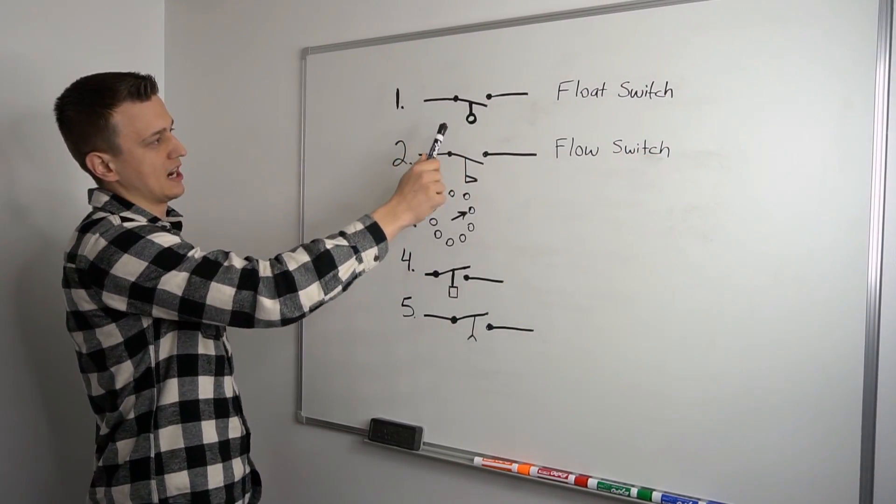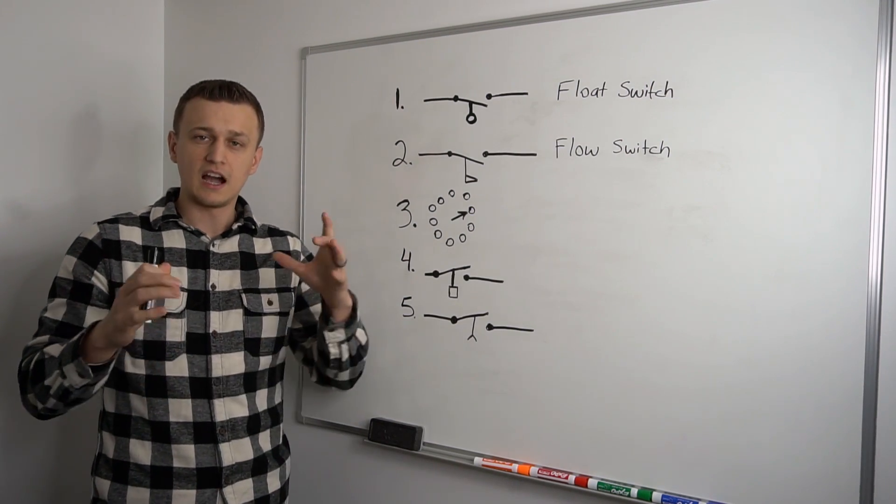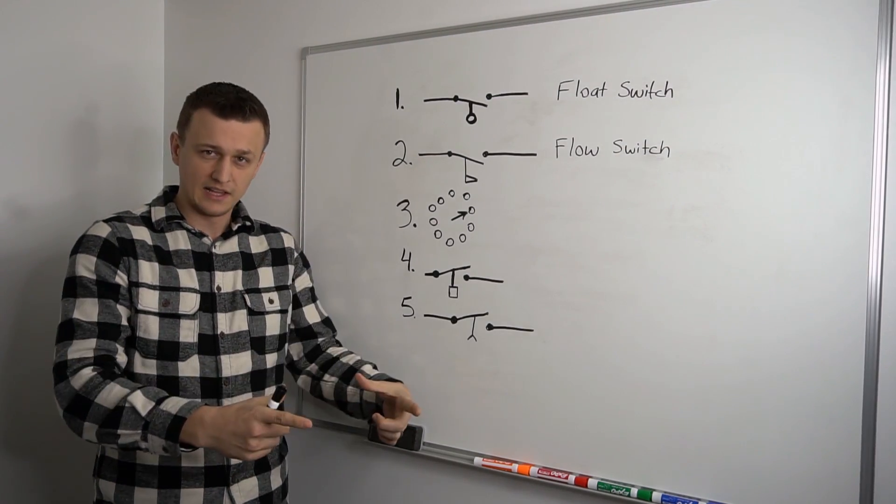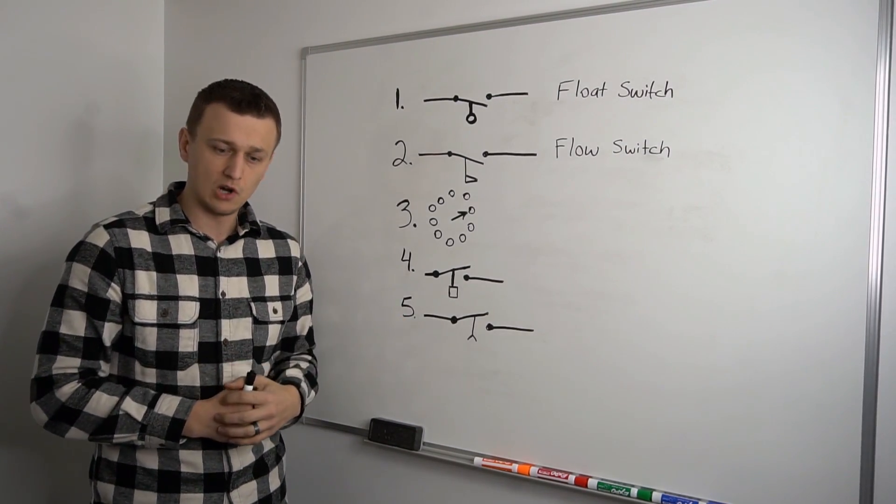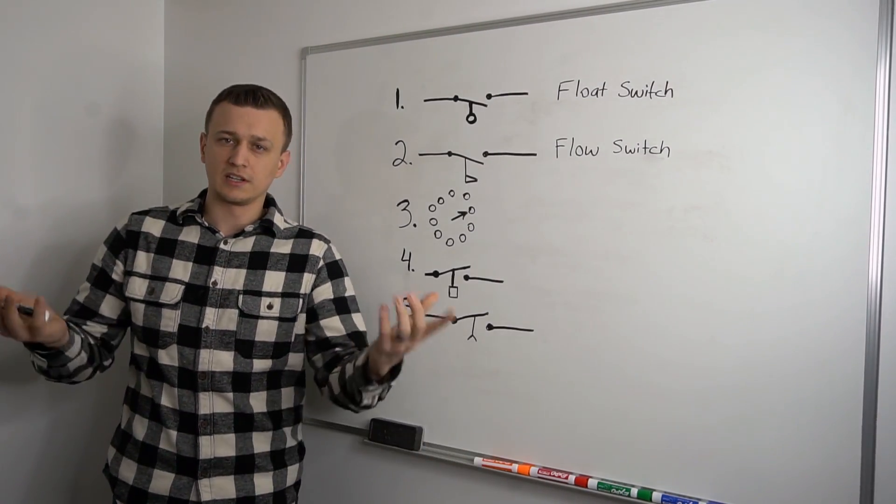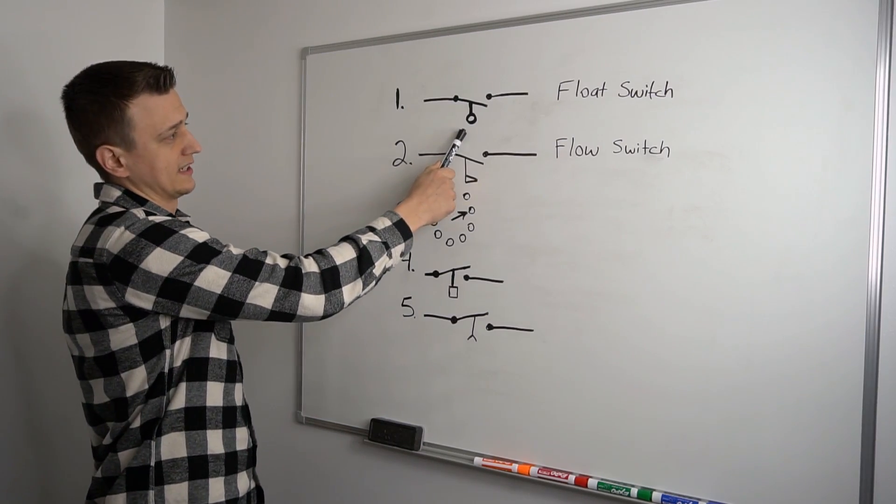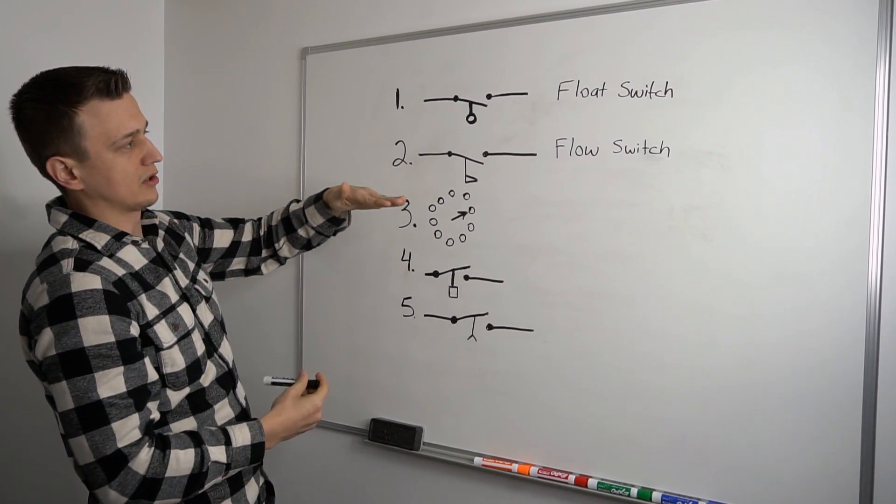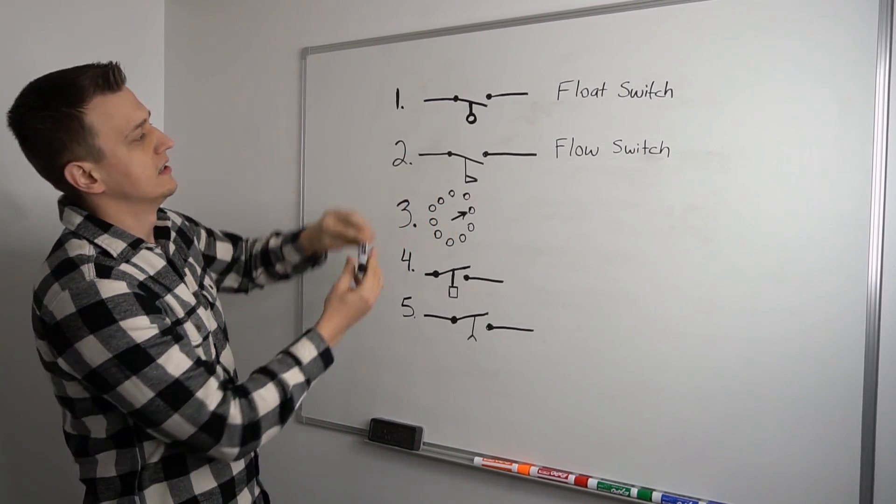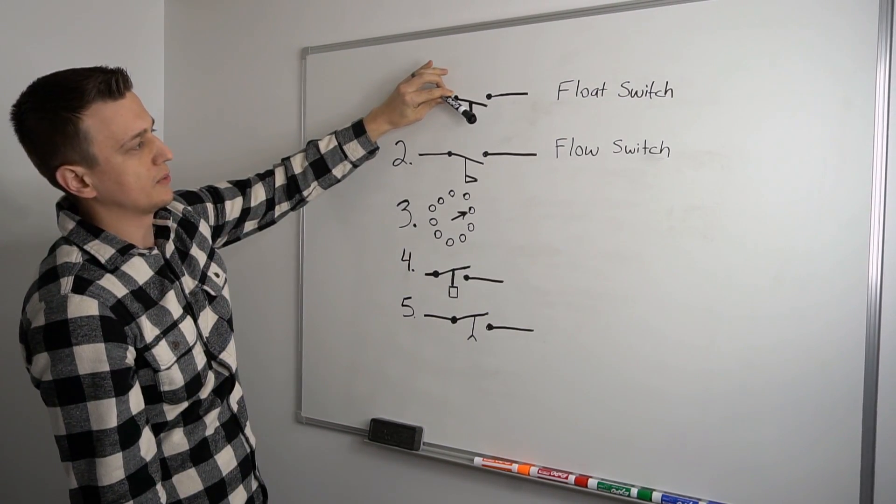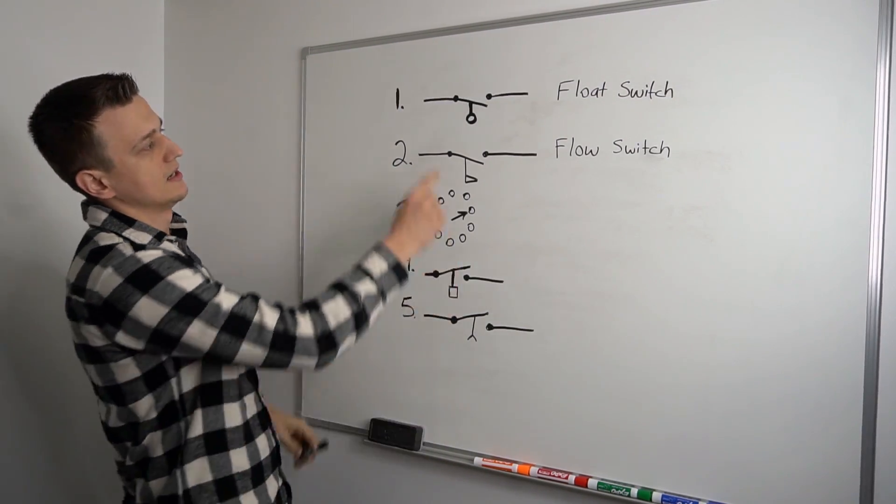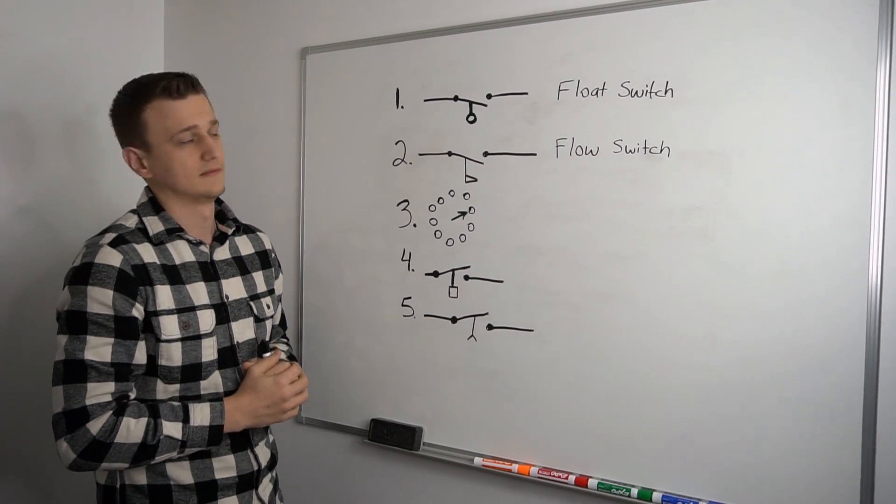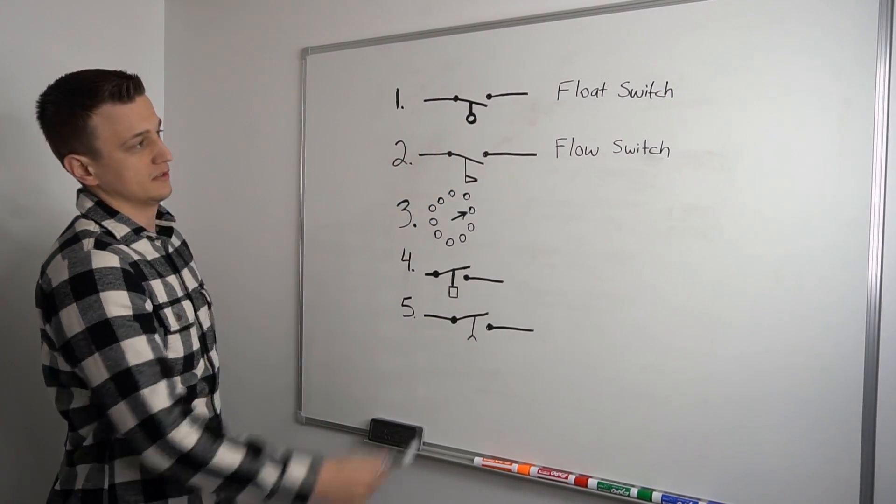So let's start with the float switch up on top. A good example of one of those would be a condensate drain pump on a furnace or maybe for an air conditioner. If the unit does not have a floor drain anywhere nearby, a lot of times a condensate drain pump will be installed to pump out the water to a different location. So one of those things would have a float switch in them. What happens is it has a pan or a collection tank. Water or condensate collects in there. And as the level gets higher and higher, this float switch starts to go up. And when it goes up high enough, it closes and allows power to go through.